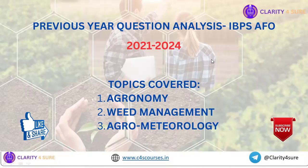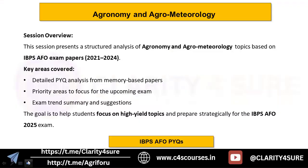Hello guys, welcome to Agri Clarity. Today's session we are going to analyze the previous year questions of IBPS AFO that have appeared from 2021 to 2024, from the topics agronomy, weed management, and agrometeorology. We are going to analyze in detail about previous year questions from memory-based papers, identify the priority areas to focus for the upcoming 2025 examination, and summarize what are important high-yielding topics and how you can prepare.